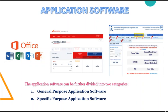So here we have finished with the two main types of software: system software and application software. In our next class, we'll learn about the operating system.